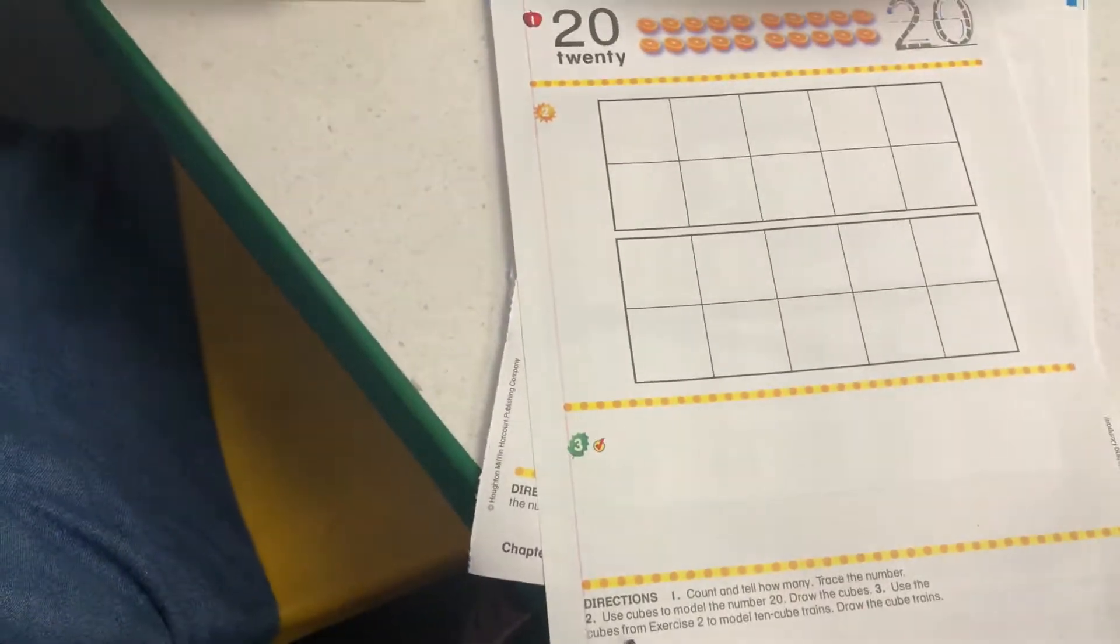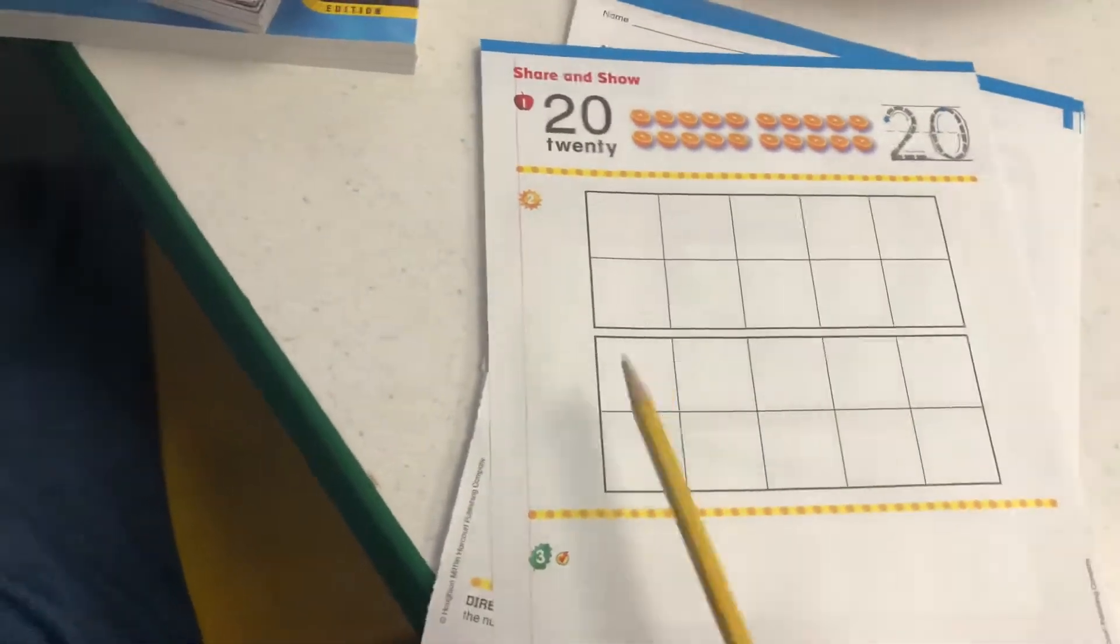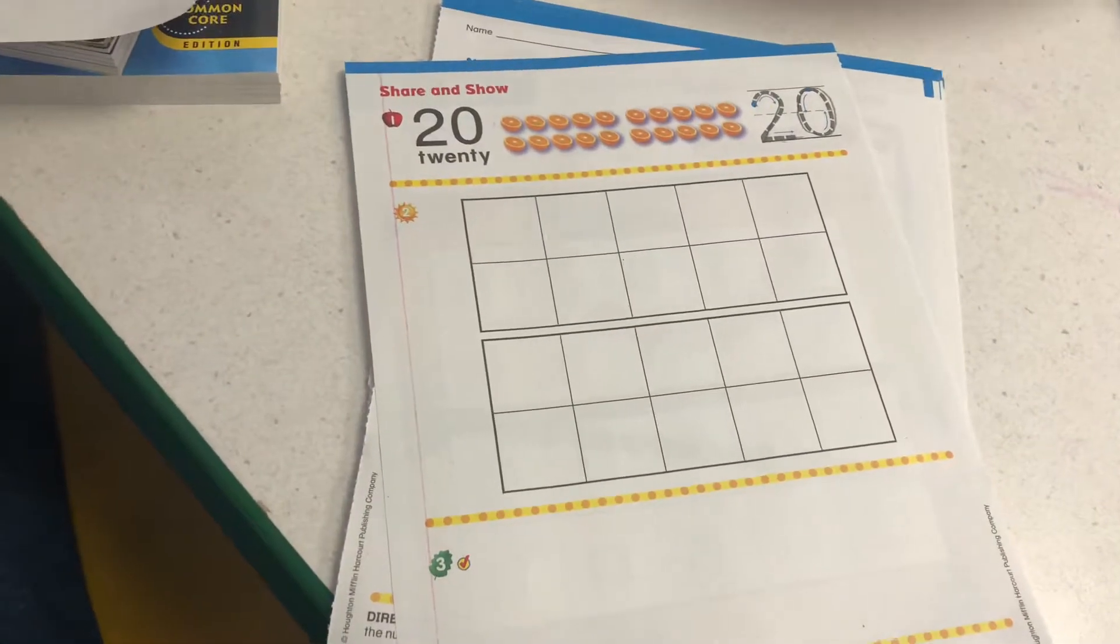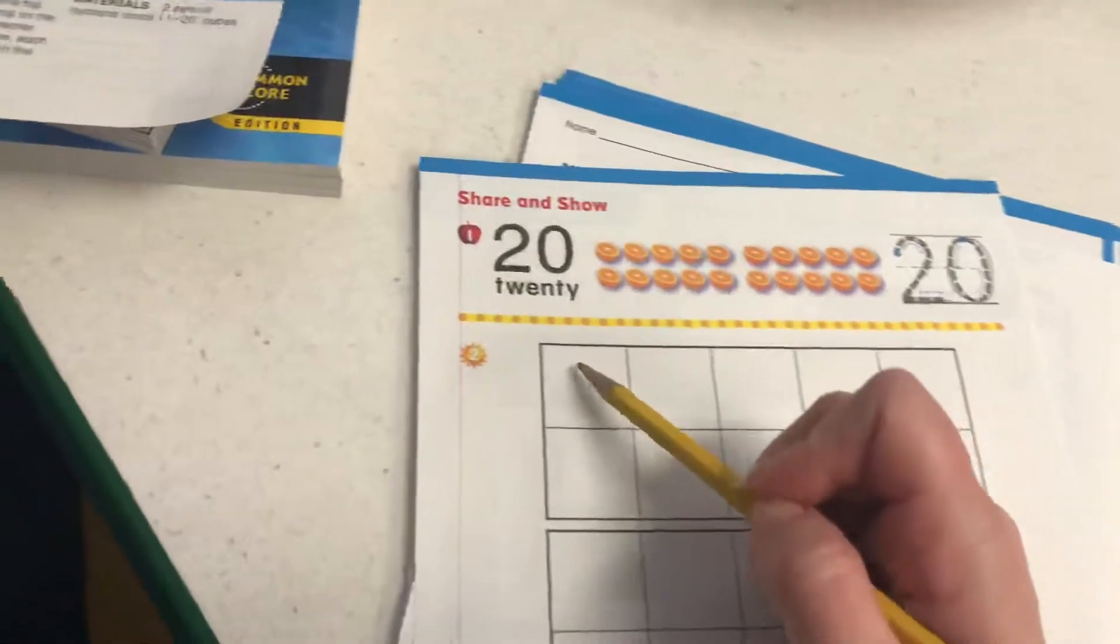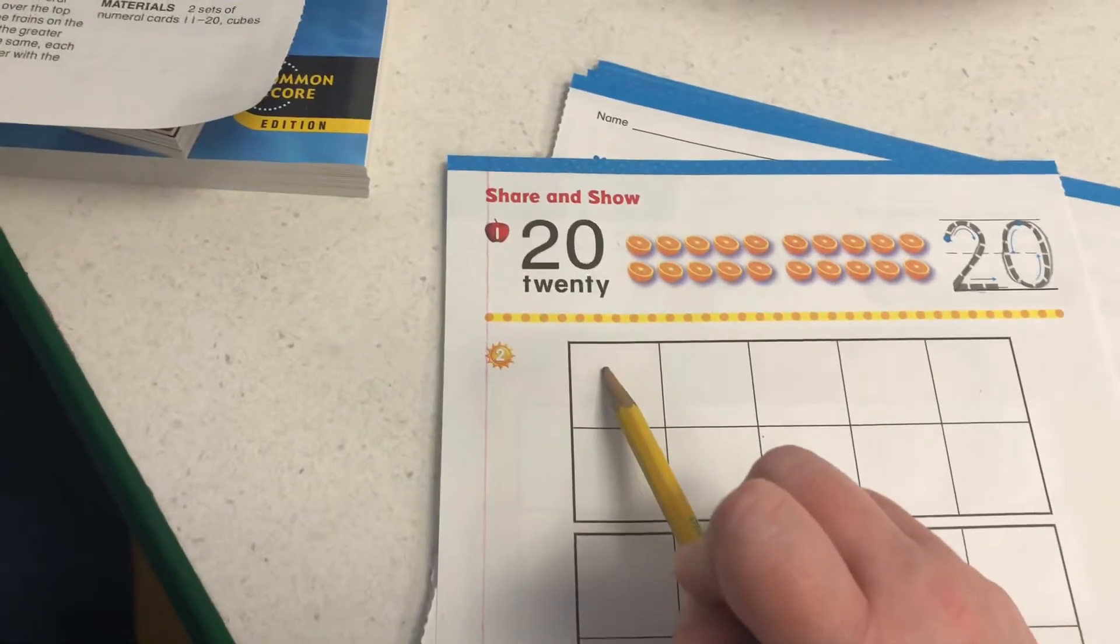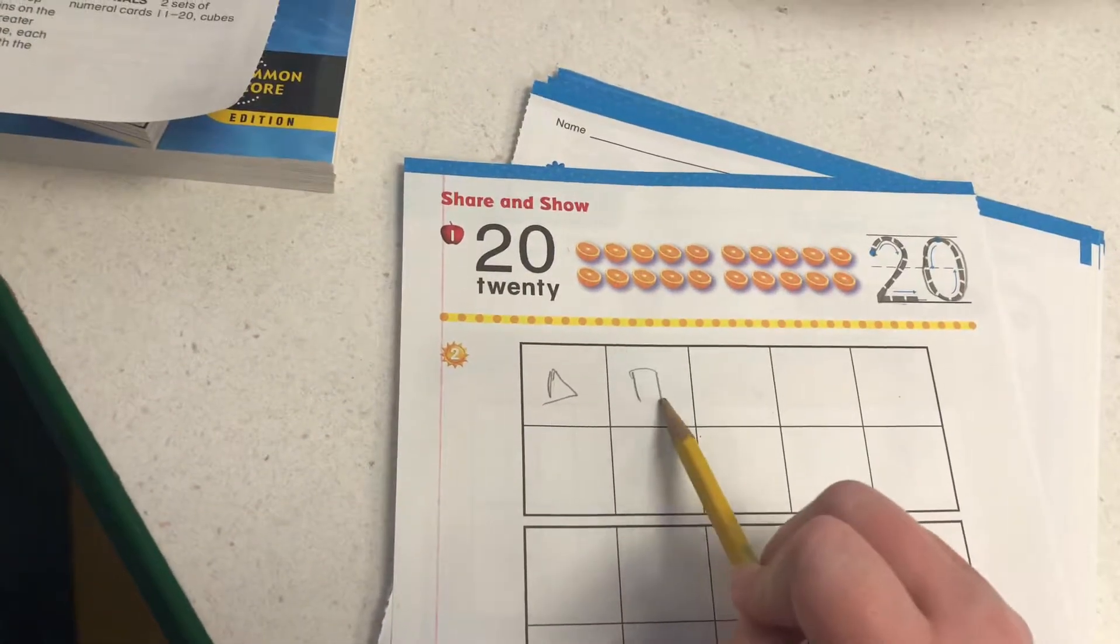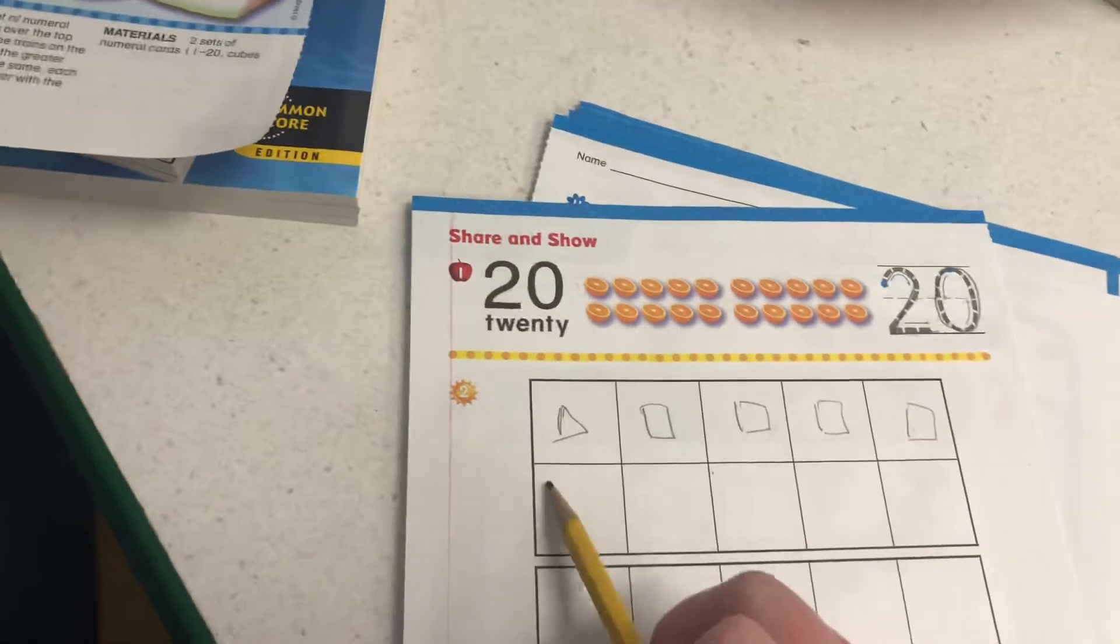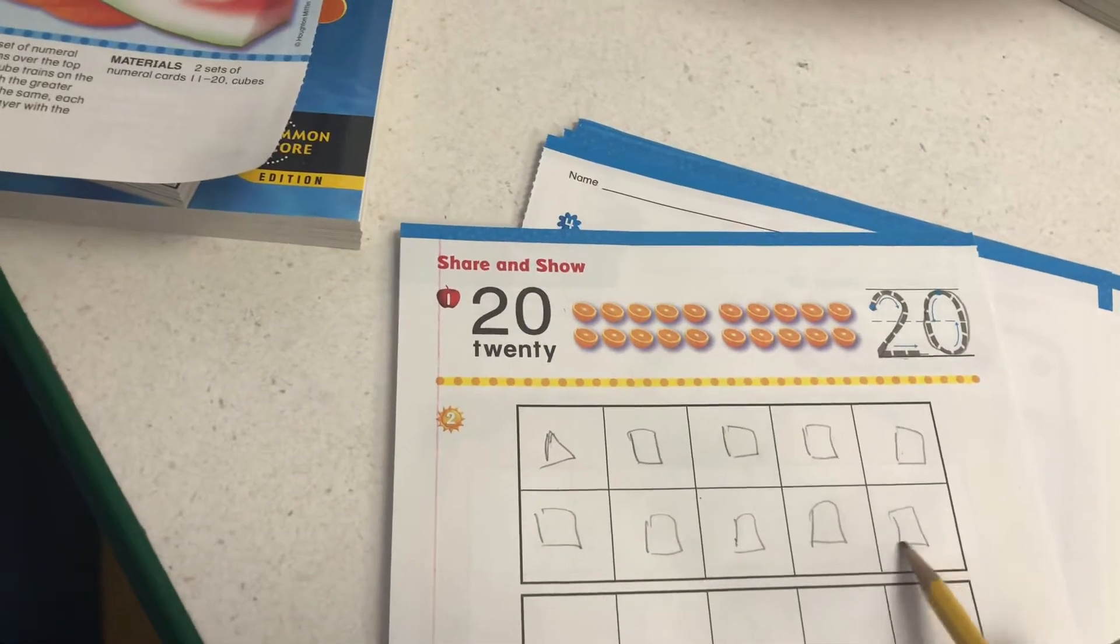Next part. It says use cubes to model the number 20. You can use whatever you have at home. I was going to send cubes home, but we didn't have enough for everyone. So just like we've done in the past, we can just put squares in to show cubes. One, two, three, four, five, six, seven, eight, nine, 10.